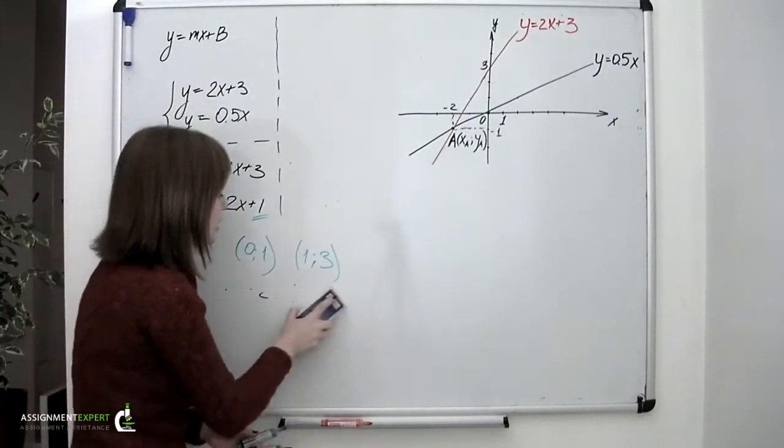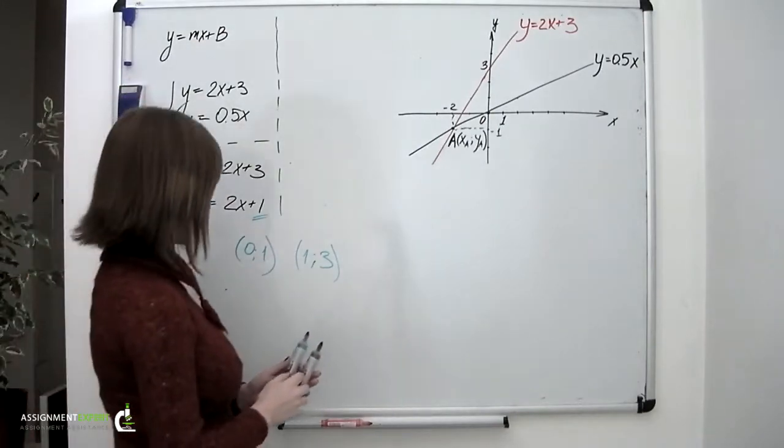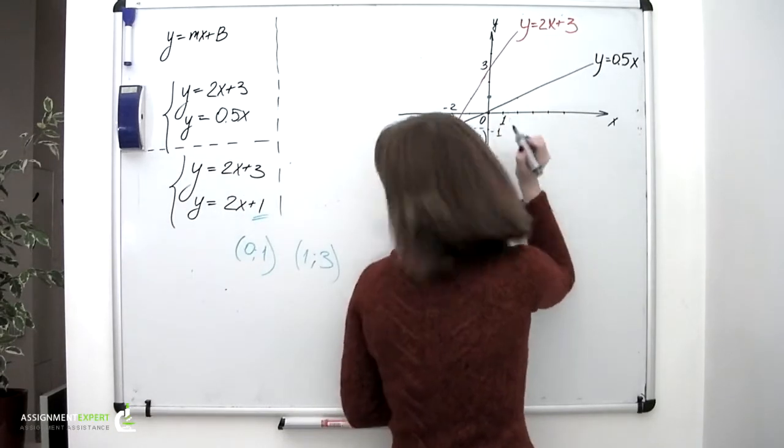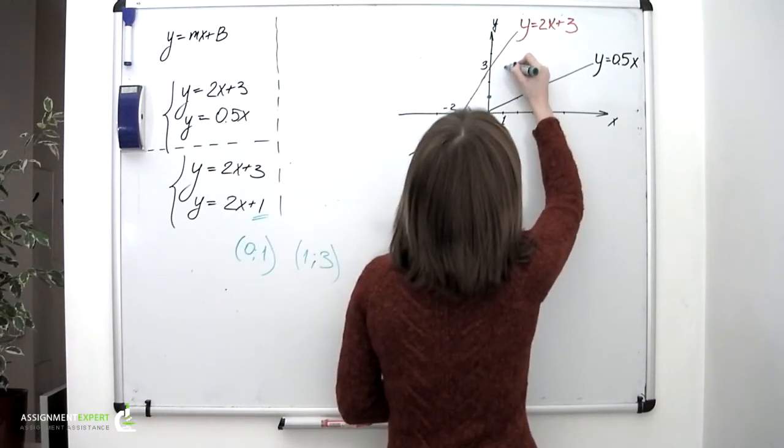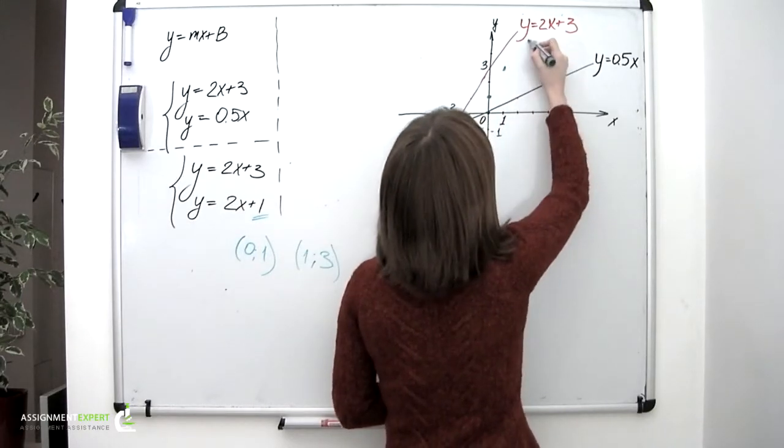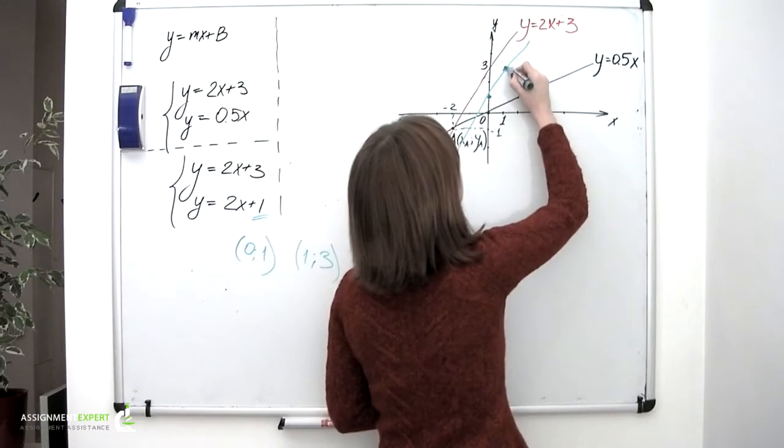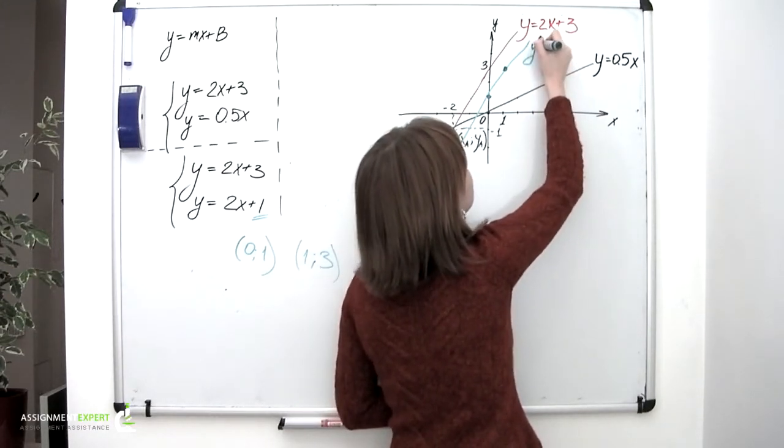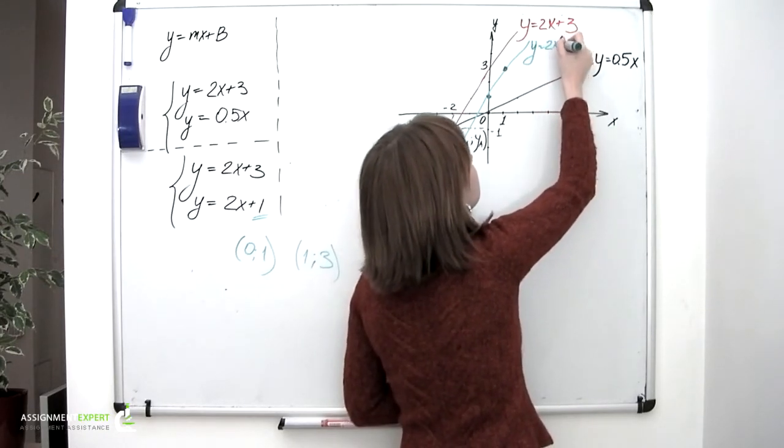Let's find them on a plane and connect them so that we could have a line. The first point with coordinates 0 and 1, and the second 1 and 3. And here it goes.